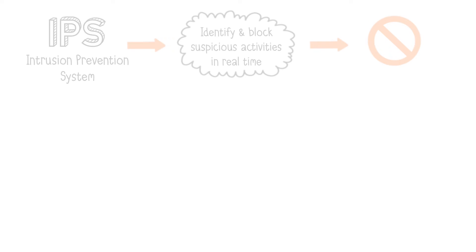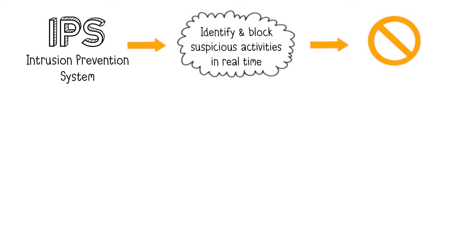Now let's move on to IPS, for Intrusion Prevention System. Unlike IDS, IPS is positioned in line, meaning it does not analyze a copy of the data, but examines the data itself. IPS operates in real-time to actively prevent identified threats. Unlike IDS, which primarily alerts, IPS reacts in real-time by stopping recognized suspicious traffic, especially by blocking ports.